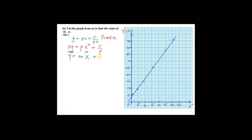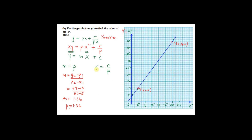To find p, calculate the gradient using two points from the straight line — for example (5, 10) and (30, 44). Gradient = (44 − 10) / (30 − 5) = 34/25 = 1.36, so p = 1.36. The y-intercept c = 4, so r/p = 4, giving r = 4 × 1.36 = 5.44.